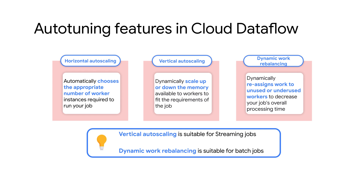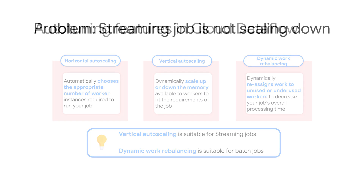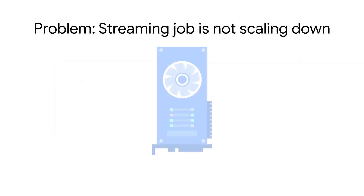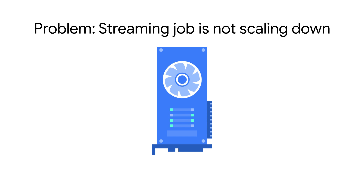While these auto tuning features help to dynamically optimize your Dataflow job, there are times when they may fail or not work as expected. Today I will show you how to troubleshoot and resolve one of the common issues with auto tuning in Cloud Dataflow: Dataflow workers for streaming jobs aren't scaling down enough.